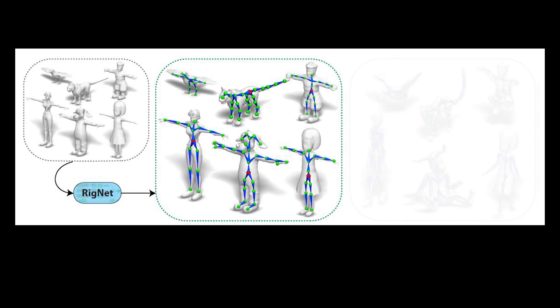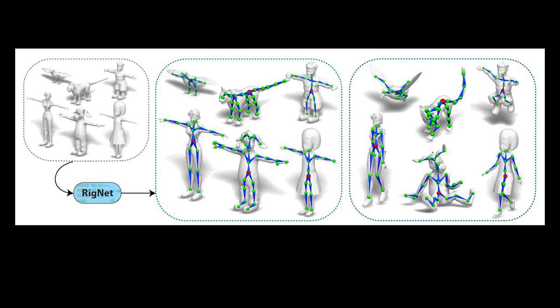RigNet is a deep learning approach that automatically creates animator-ready character rigs based solely on that character's geometry. Here's an example.